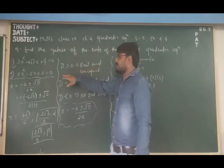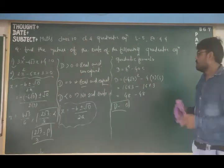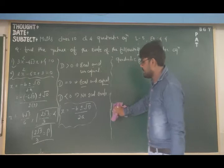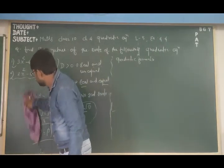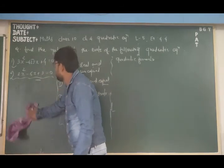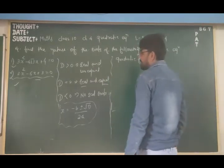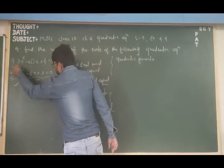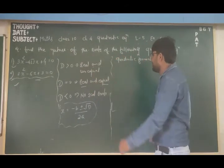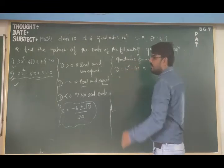Now let's look at another question: 2x² - 6x + 3 = 0. We again start by defining D equals b squared minus 4ac. From this equation, b equals minus 6, a equals 2, and c equals 3.